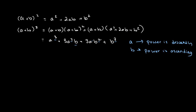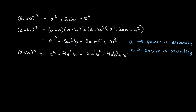In a similar fashion, we can solve for a plus b to the fourth power. What we end up getting is a to the fourth plus 4a cubed b plus 6a squared b squared plus 4a times b cubed plus b to the fourth.